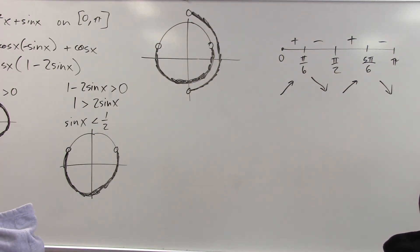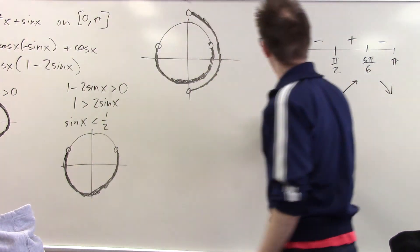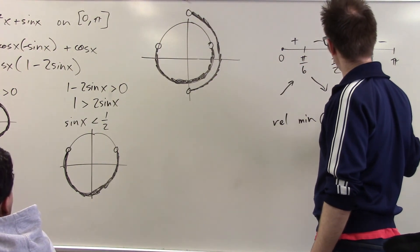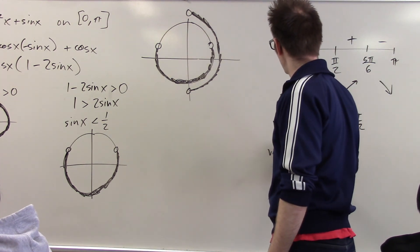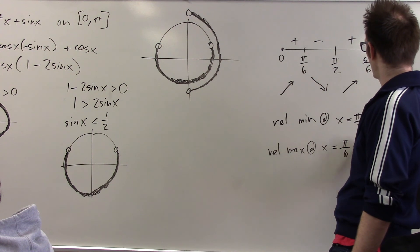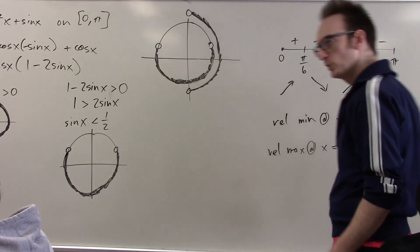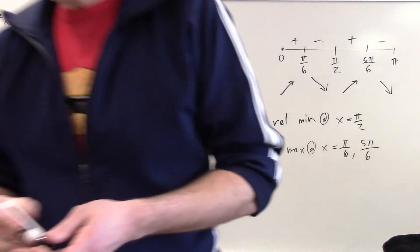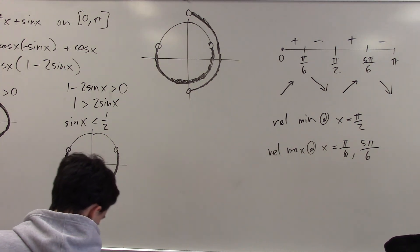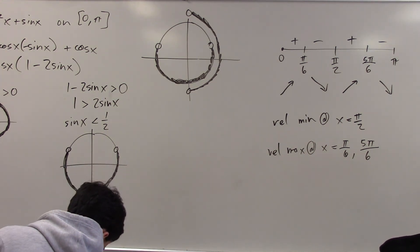Oh, so where does this function have a relative minimum? Pi over 2. Yep, so relative min at x equals pi over 2, relative max at x equals pi over 6 and 5 pi over 6. Woo-hoo! All right. Good. That's all I got. Say goodbye to period 3. Goodbye, period 3. Adios. Hope you had a fun while at period 3. All right. Boom.